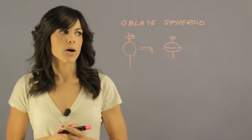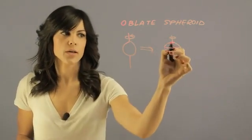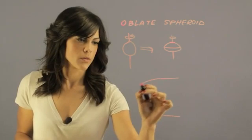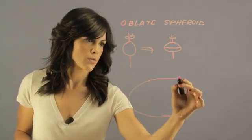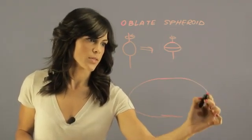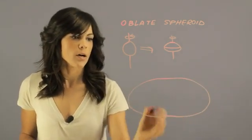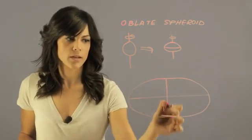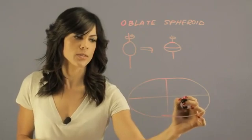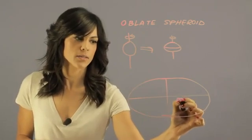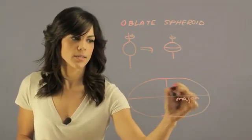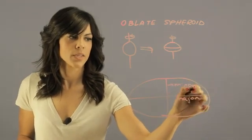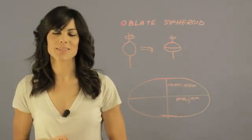So as we can see, they're shorter in one end. Let's draw one — this is kind of exaggerated. But that means it has one long axis and a short axis. So this is the major axis and this is the minor. And this is the shape of actual planets.